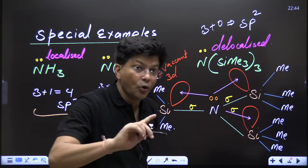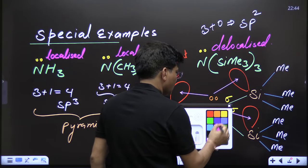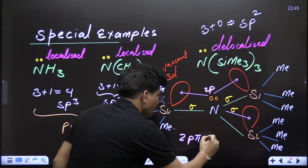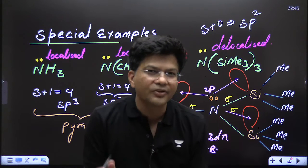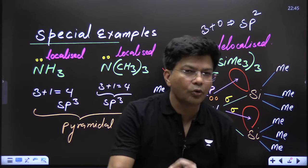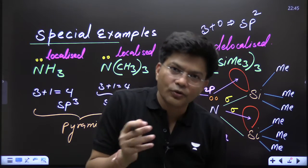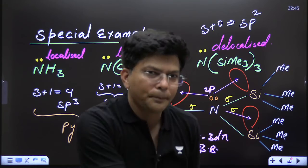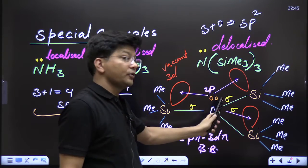No — in N(SiH₃)₃, this lone pair is doing back bonding. This nitrogen's lone pair is in 2p, and it is moving to 3d of silicon via 2p–3d π back bonding. This lone pair is not only residing on nitrogen — it is moving to silicon one, silicon two, silicon three, and back to nitrogen. It is the property of four atoms, so no single atom can claim it. You cannot count this lone pair. So: 3 sigma + 0 lone pairs = 3 → sp² hybridization, trigonal planar.